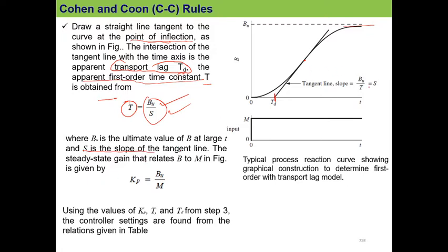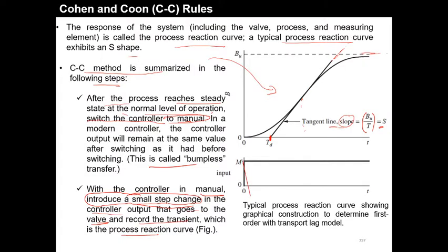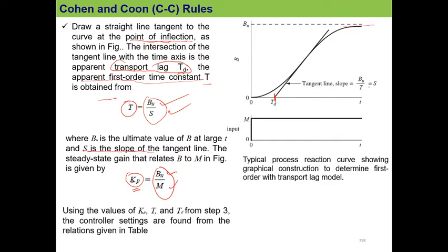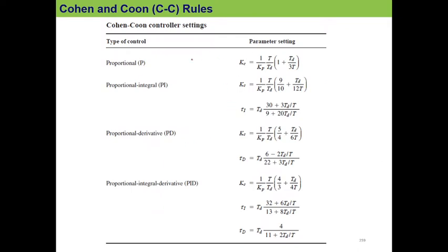Now we also find out the steady-state gain. The gain Kp is calculated as Kp = bu / m, where m is the step change we provided. Using bu and m, we can find Kp, since Kp × m = bu. Using the values of Kp, t, and td, you can find the controller settings using the Cohen-Coon controller settings table.